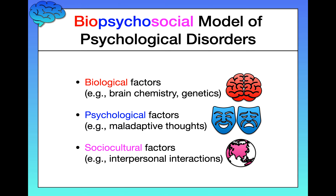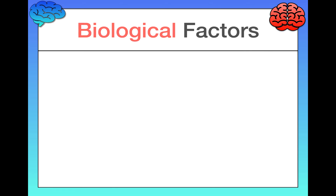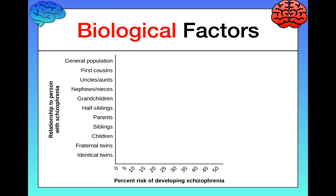Now let's focus specifically on biological factors for just a moment. A large body of research suggests that most psychological disorders have a genetic component, and that some disorders are even primarily caused by genetics. Let's take a look at a graph of heritability estimates for schizophrenia to illustrate.